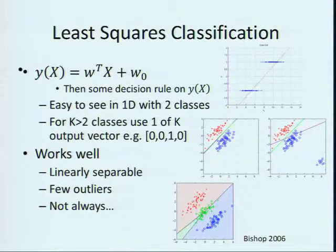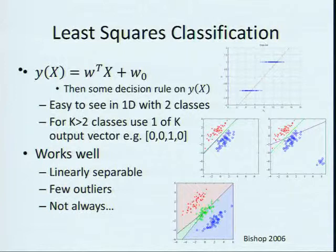Another issue is that sometimes when there are fewer dimensions than classes, you get some unexpected behavior. Data that are really easily linearly separable can still be handled poorly by the least squares classifier. So you may need to find something else in those cases, but in general it actually does pretty well.